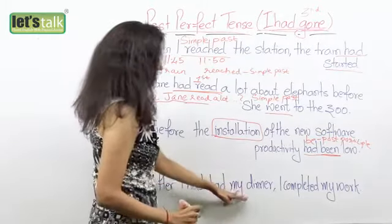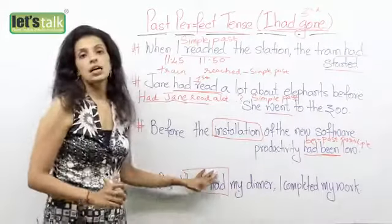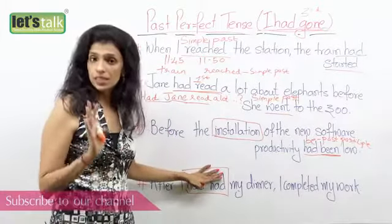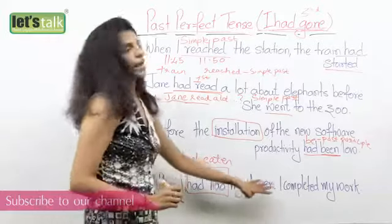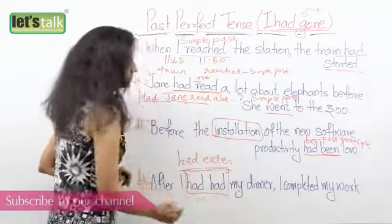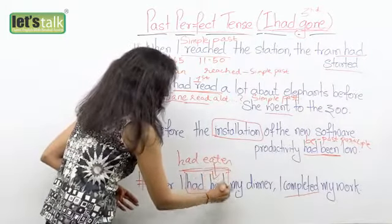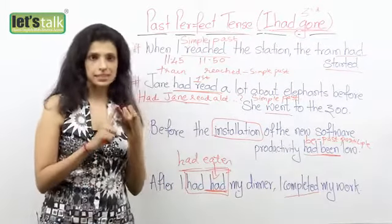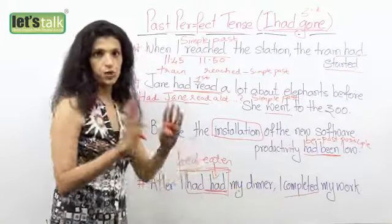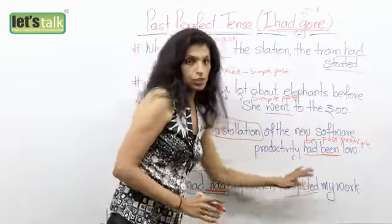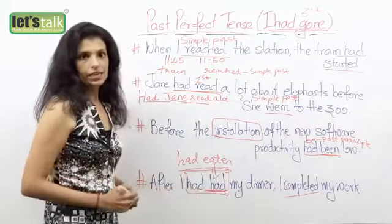In my next sentence: 'After I had had my dinner, I completed my work.' A lot of people get confused — how can 'had' and 'had' come together? Well, it can — it's very simple. Supposing I say 'after I had eaten my dinner, I completed my work' — that means first I ate and then I completed, so past perfect here and simple past here. All I've done is, instead of 'eaten,' I have used 'had' — the third form of 'have.' You have 'have' in the first form, 'had' in the second form, 'had' in the third form. So it is nothing but replacing the verb 'eaten.' So you say 'after I had had my dinner' — that means eating came first — 'I completed my work.' Such a sentence structure is absolutely correct. Don't have the misconception that 'had' and 'had' can never come together — they can in a past perfect tense.